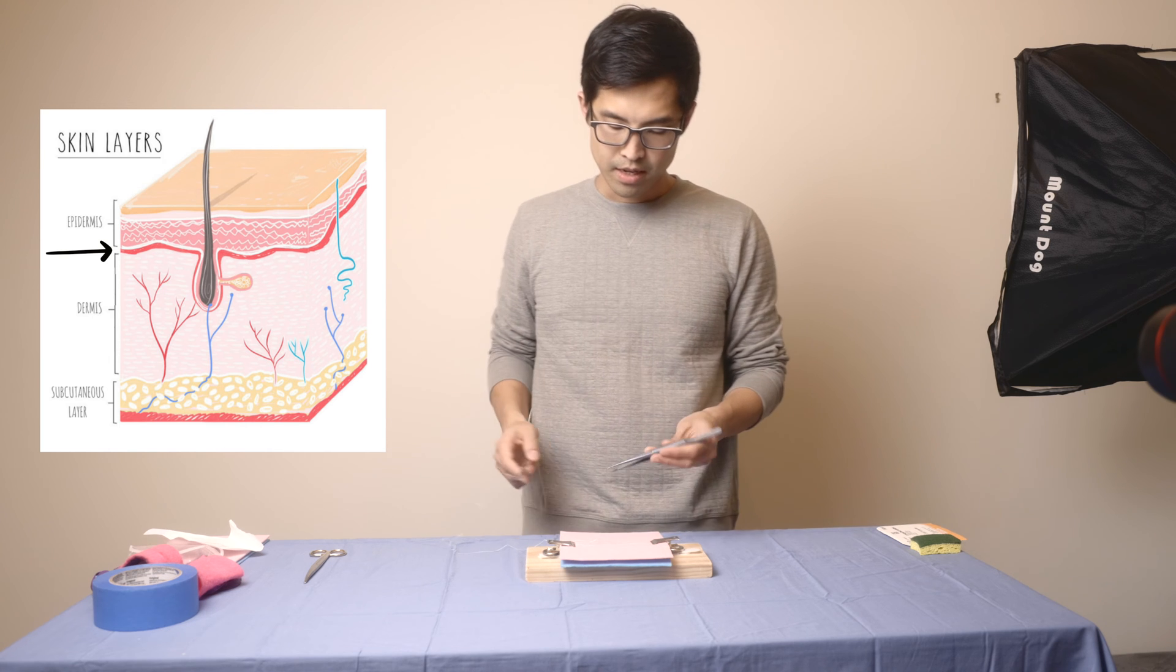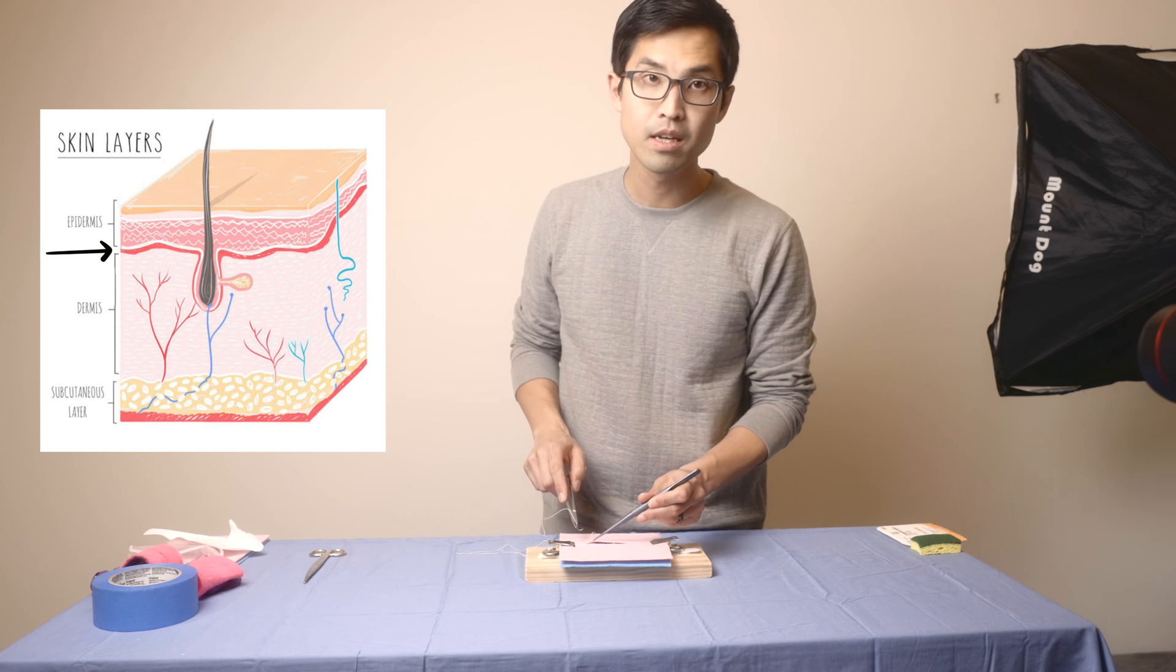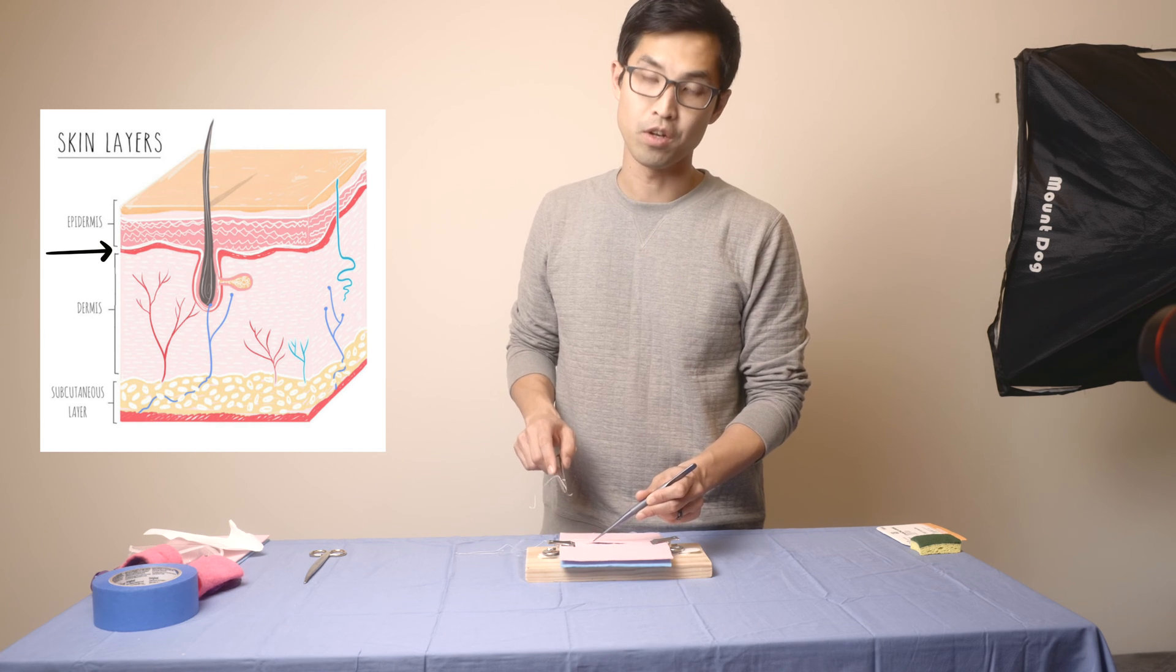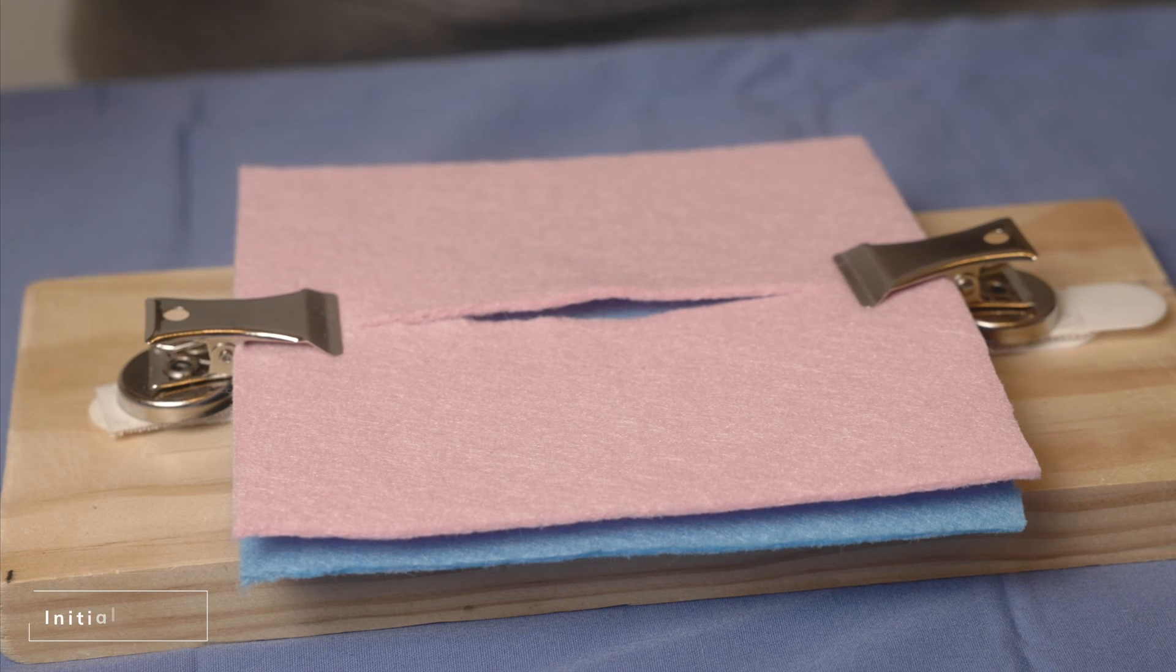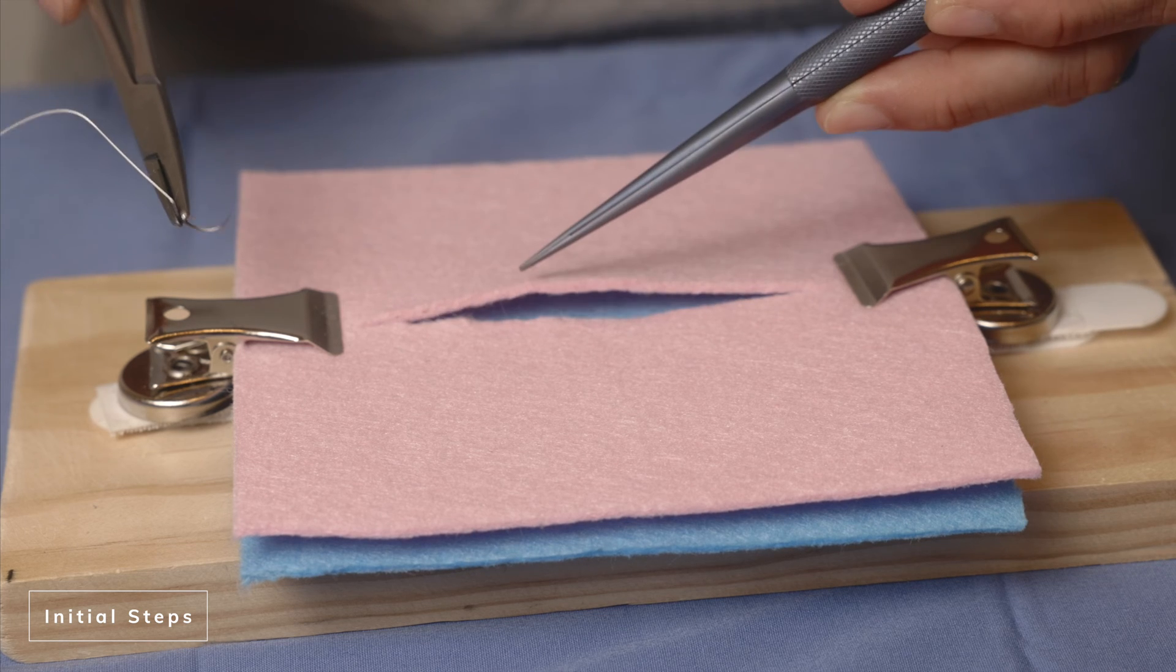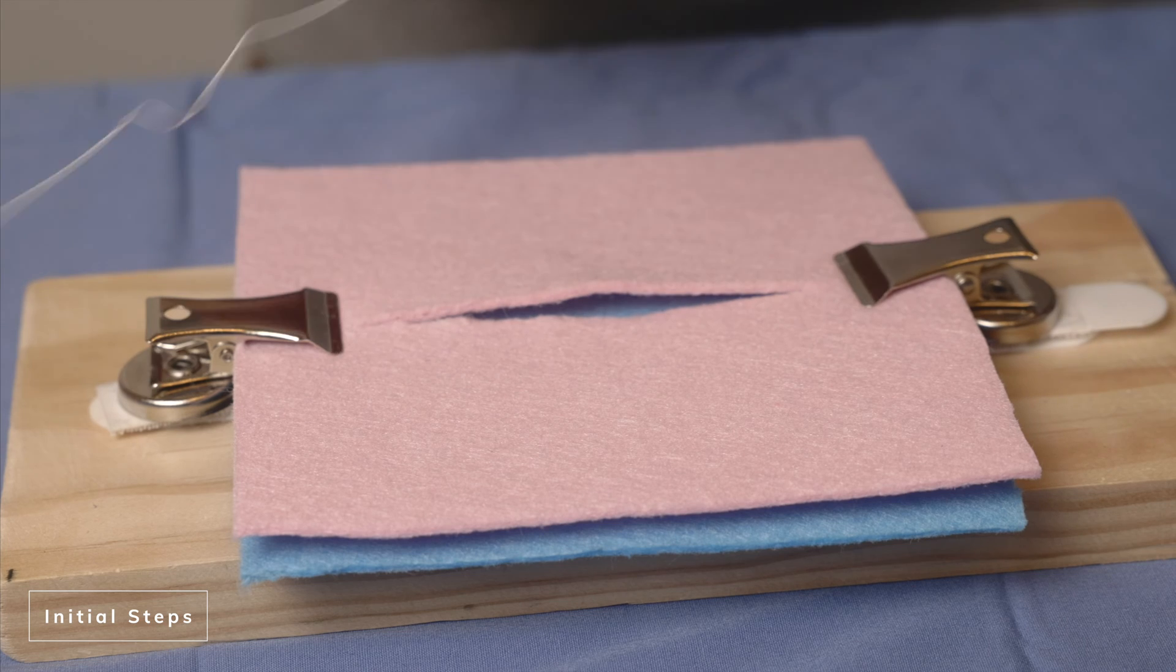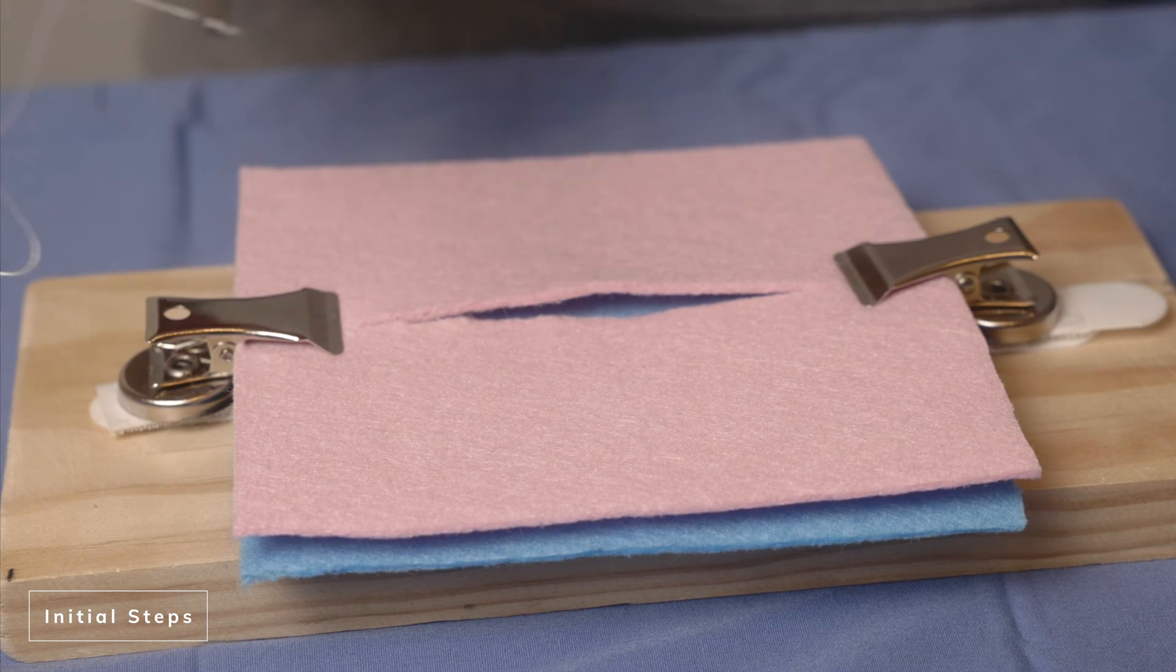So for instance, now if you were to imagine for a second, this pink layer of felt is the subcuticular layer that you're closing. Imagine that the layer of skin that you're trying to close is this pink felt layer. It's thicker than what you're traditionally going to see in the OR, but just for demonstration's sake.